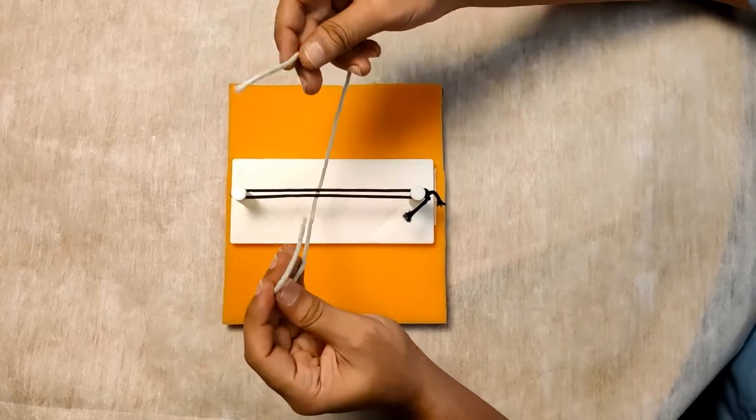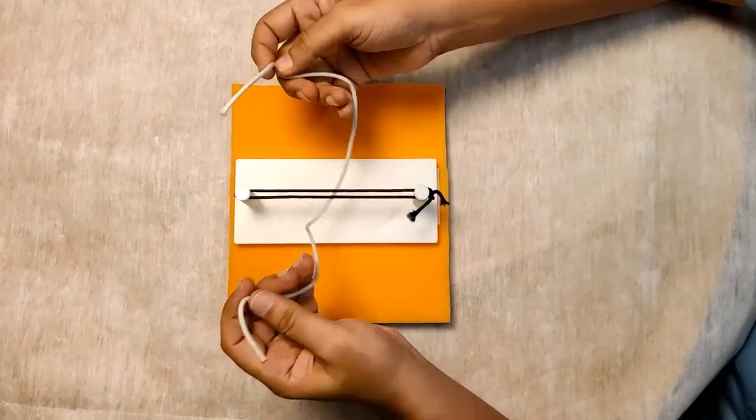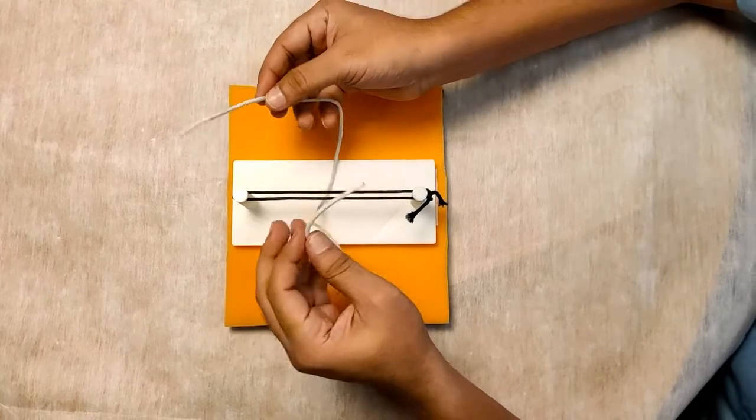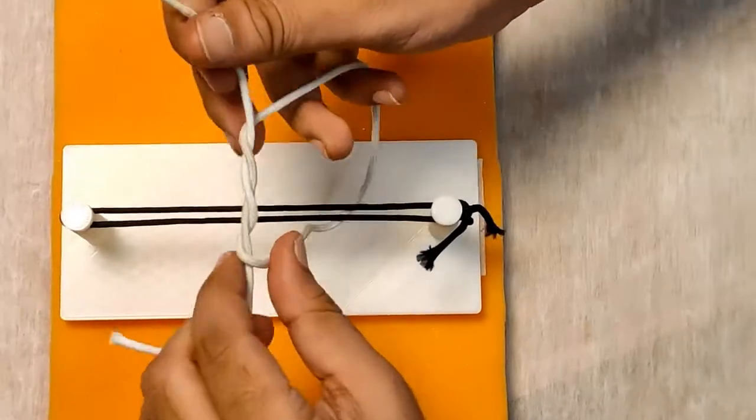The third type of knot is the surgeon's knot. A surgeon's knot is specifically said to be more secure. The technique of tying a surgeon's knot is you take a double through knot on the first loop, which is